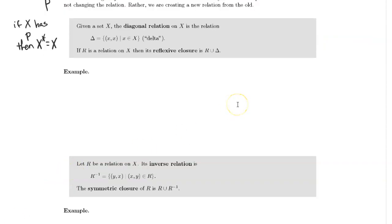So let's see our first closure. Given a set X, the diagonal relation on X is the relation delta, which is all of the pairs X cross X.